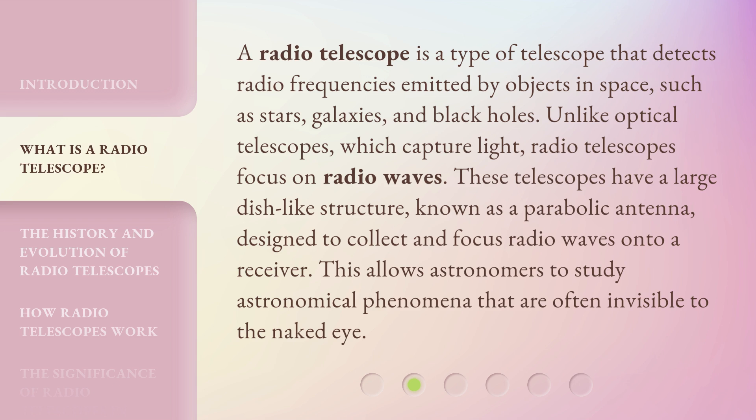These telescopes have a large dish-like structure, known as a parabolic antenna, designed to collect and focus radio waves onto a receiver. This allows astronomers to study astronomical phenomena that are often invisible to the naked eye.